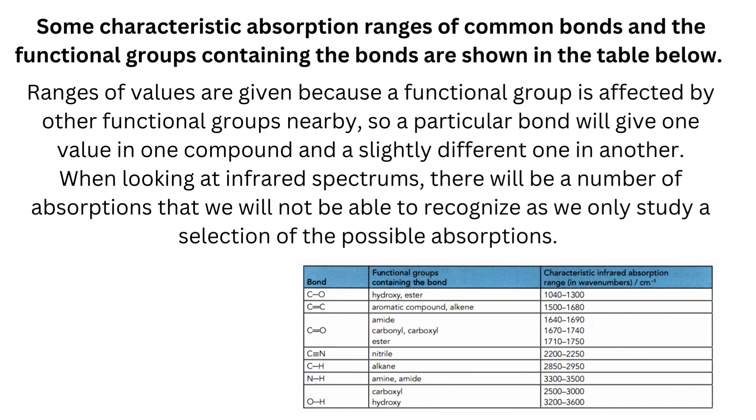A particular bond will give one value in one compound and a slightly different one in another. When looking at infrared spectrums, there will be a number of absorptions that you will not be able to recognize, as we only study a selection of the possible absorptions.